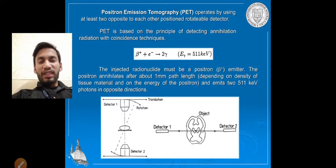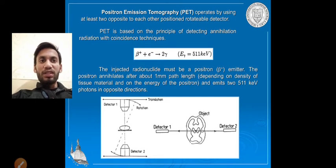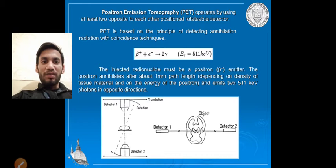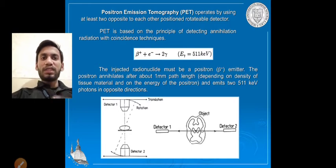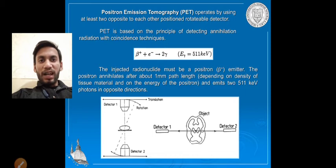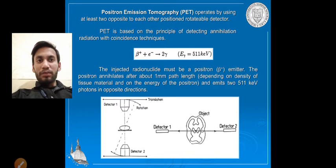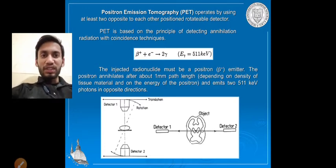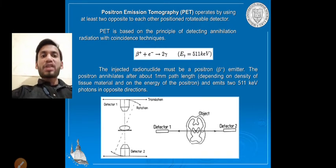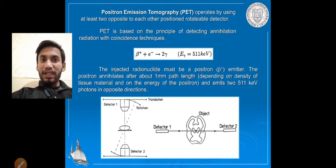PET operates using at least two detectors positioned opposite to each other, with the object placed between them. It is based on the principle of detecting annihilation radiation using the coincidence technique. When a positron is bombarded with an electron, gamma rays are emitted at 511 kilo-electron volts.